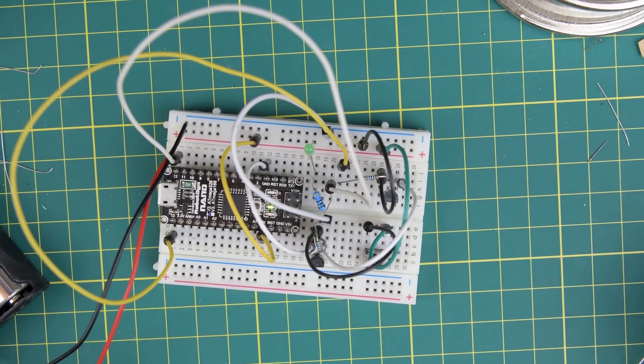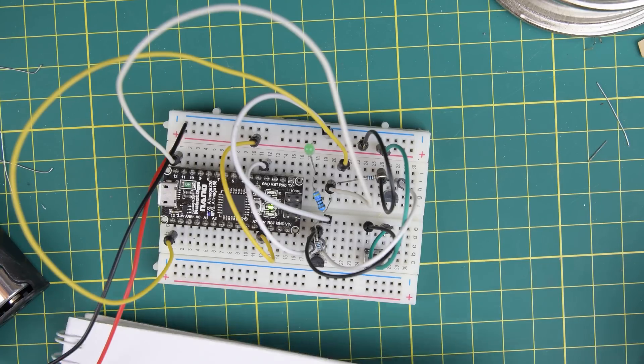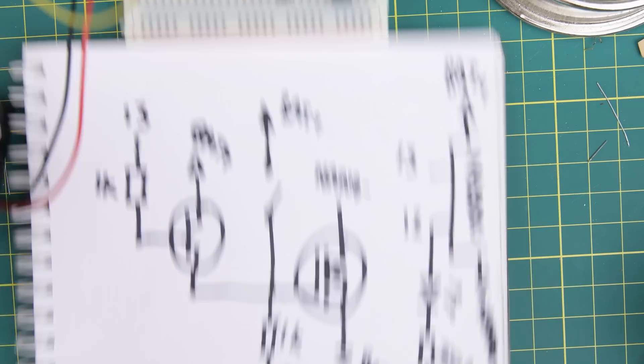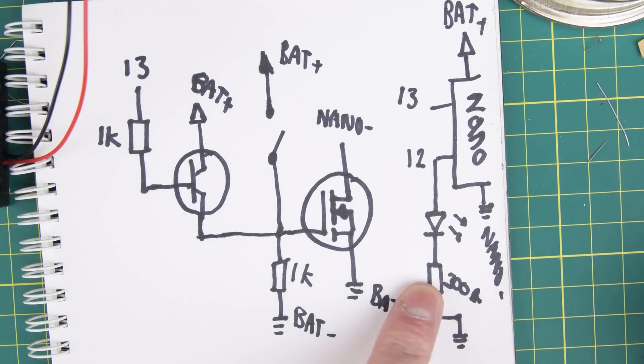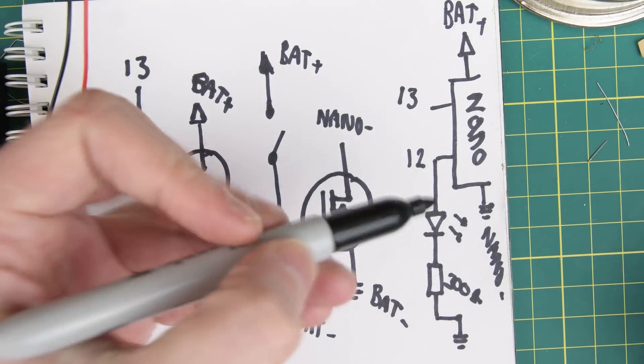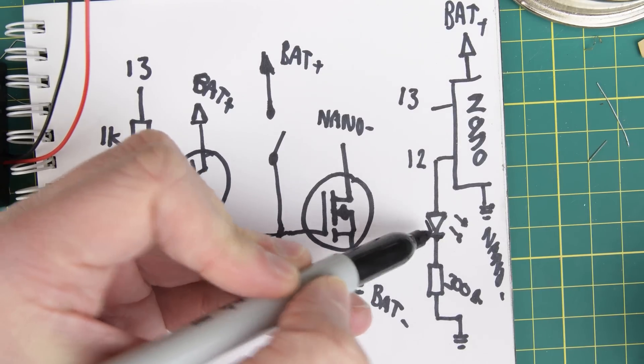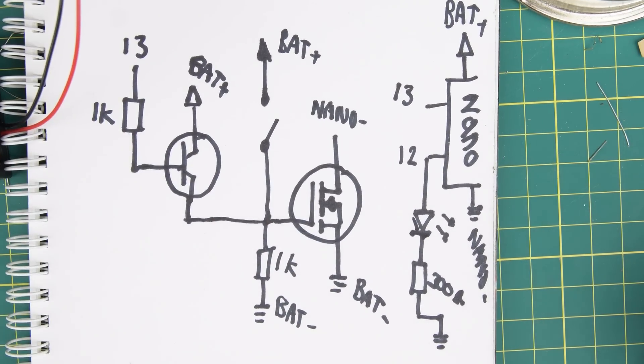This will turn the microcontroller on, it will flash this LED and then turn itself off. However, in the circuit diagram itself, so it's about to switch itself off, there we go, in the diagram itself I showed you the LED connected to pin 12 via a resistor to ground.